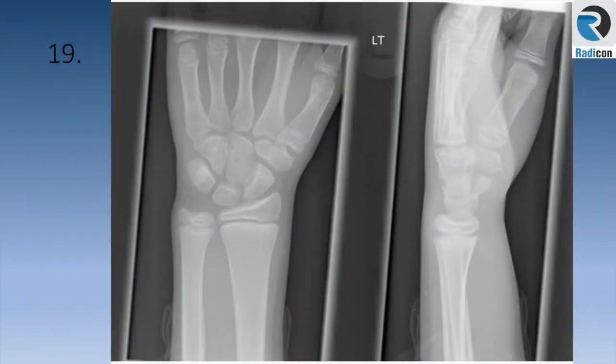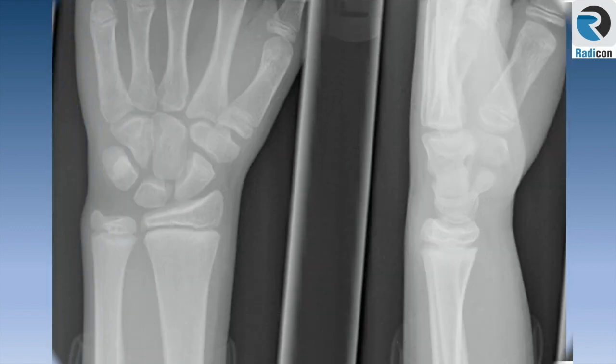Case 19. Images of the left wrist, immature skeleton. The zoomed-up image shows no significant abnormality. It's a normal film.